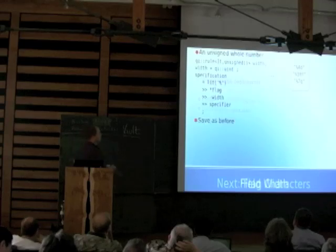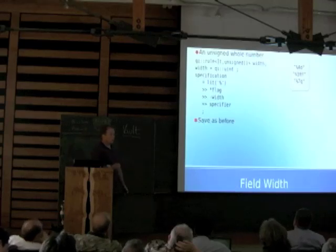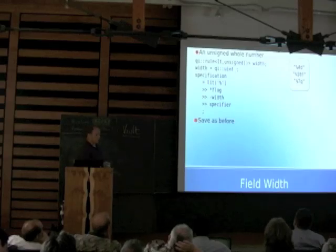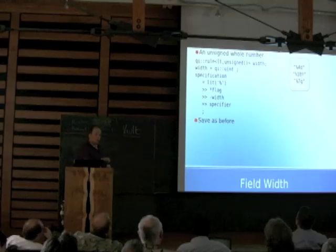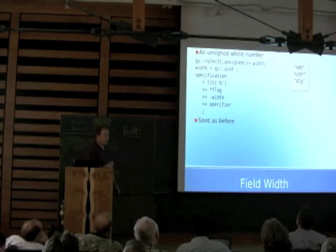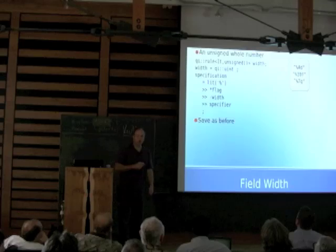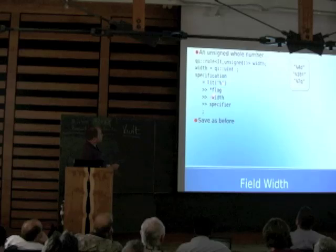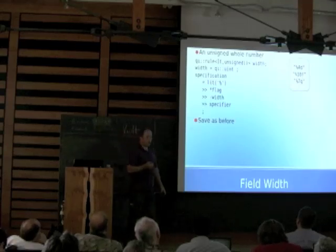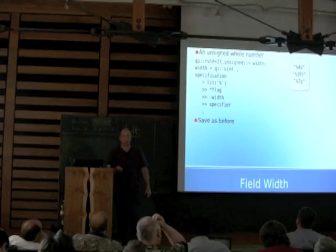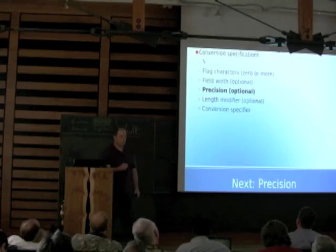Field width is optional. It's defined as an unsigned whole number, so the parsing for that is pretty simple — it's qi::uint_. I've put it inside a rule, which was not necessary except that being in a rule means I could provide a name for it, and we'll see later how that comes into play. But just as easily this could have been minus qi::uint_ right inline and it would have done the same thing. You have to save it, so you've got to have a semantic action to squirrel it away someplace.